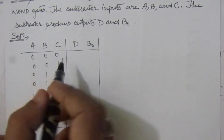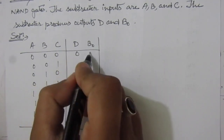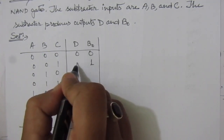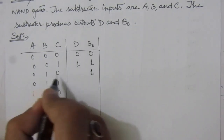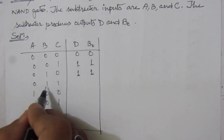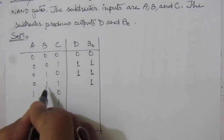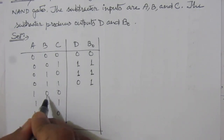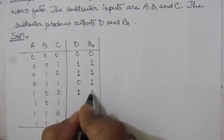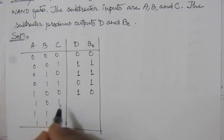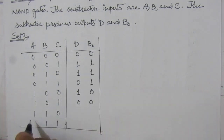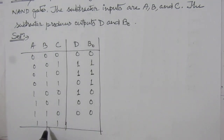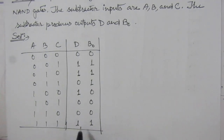For 0 minus 0 minus 0, difference is 0 and borrow is 0. For 0 minus 0 minus 1, we have to take 1 borrow and the difference will be 1. Similarly for 0 minus 1 minus 0, borrow is 1 and difference is 1. For 0 minus 1 minus 1, difference is 1 and borrow is 1. For 1 minus 0 minus 0, difference is 1 and borrow is 0. For 1 minus 0 minus 1, difference is 0 and borrow is 0. For 1 minus 1 minus 0, borrow is 0 and difference is 0. For 1 minus 1 minus 1, borrow is 1 and difference is 1.